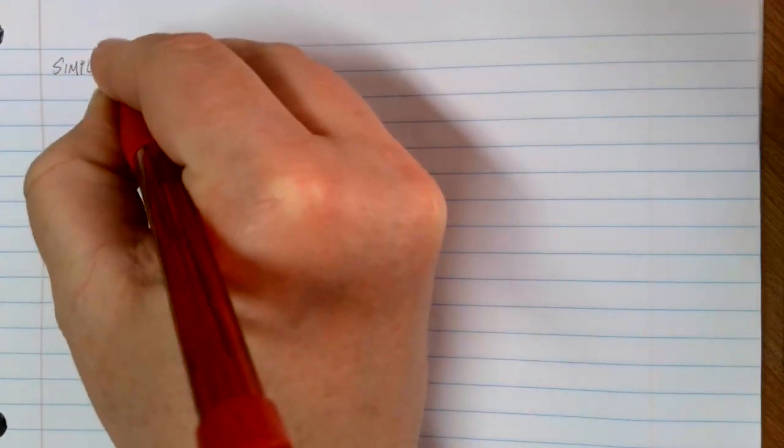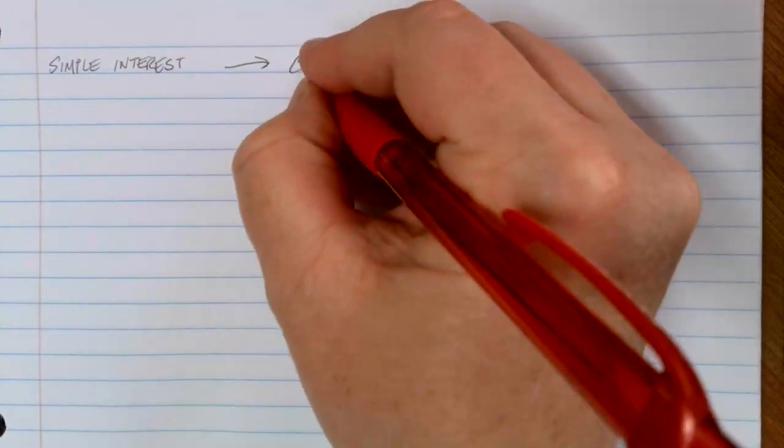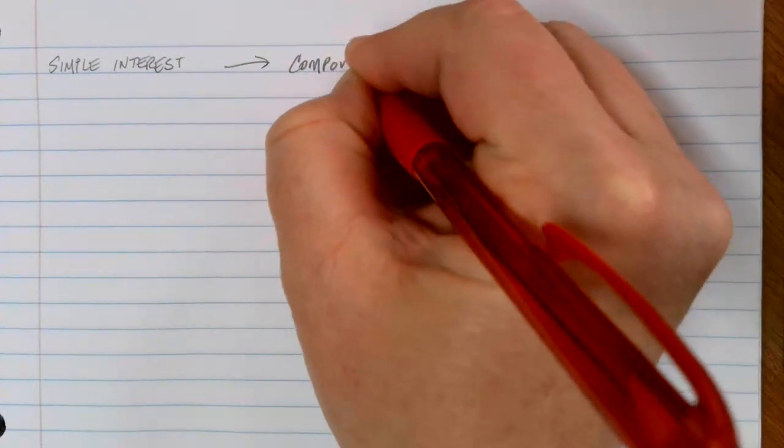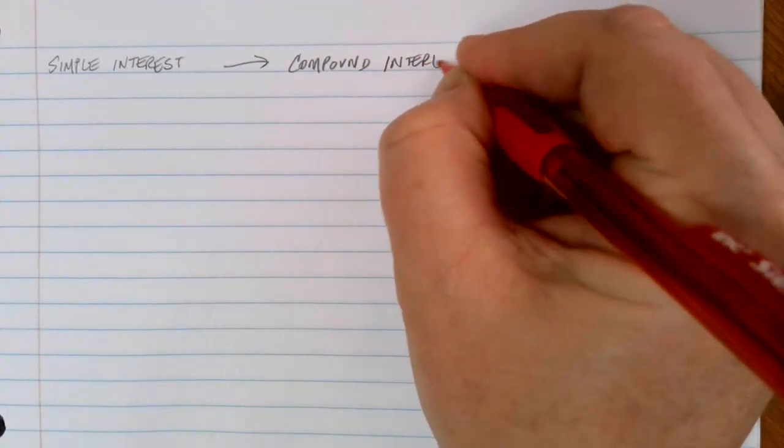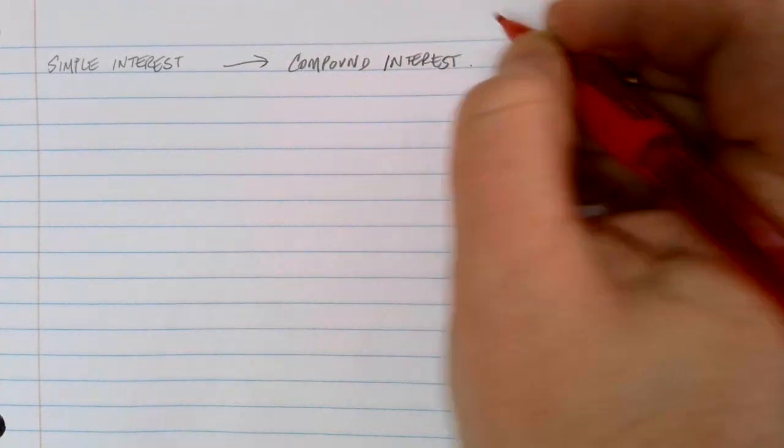As we mentioned in the last video, the concept of simple interest is the basis for a lot of things, but it's not really used very often. One of the things that simple interest is the basis for is this idea of compound interest, which is used all of the time. The idea of compound interest is basically this.